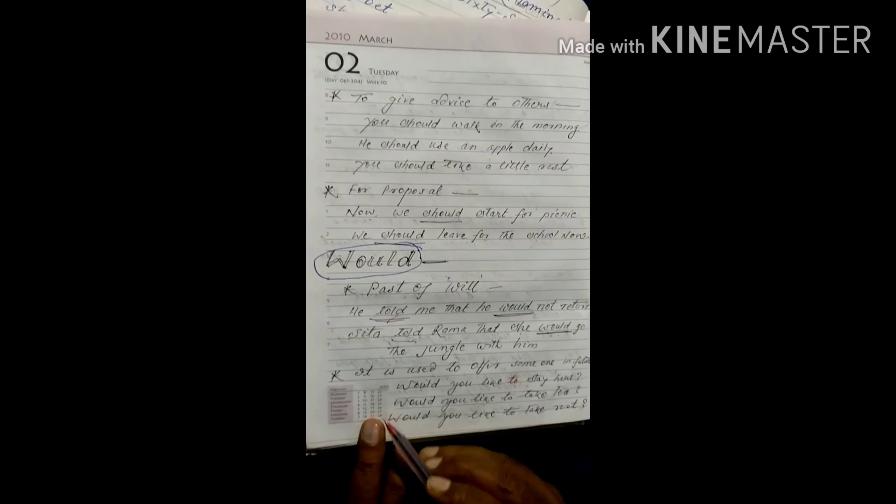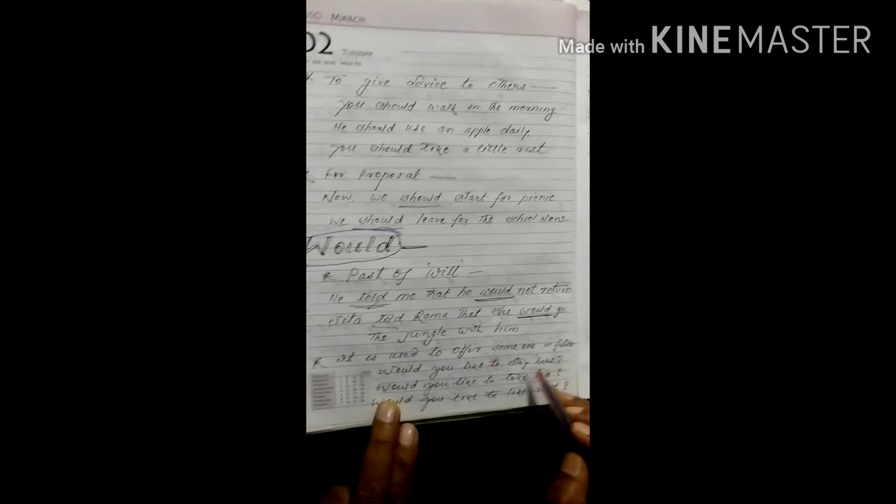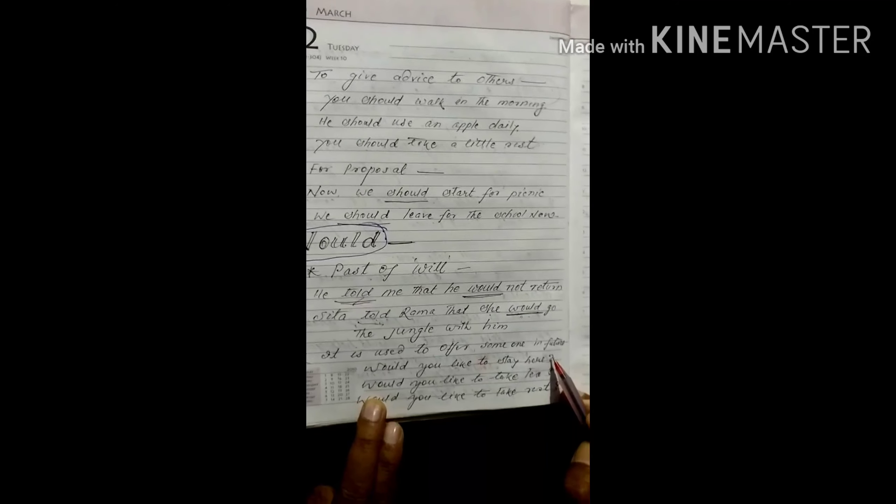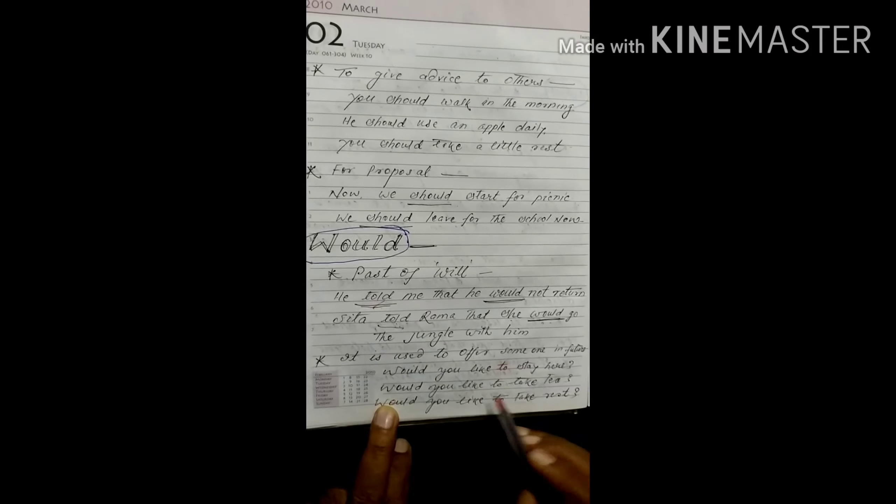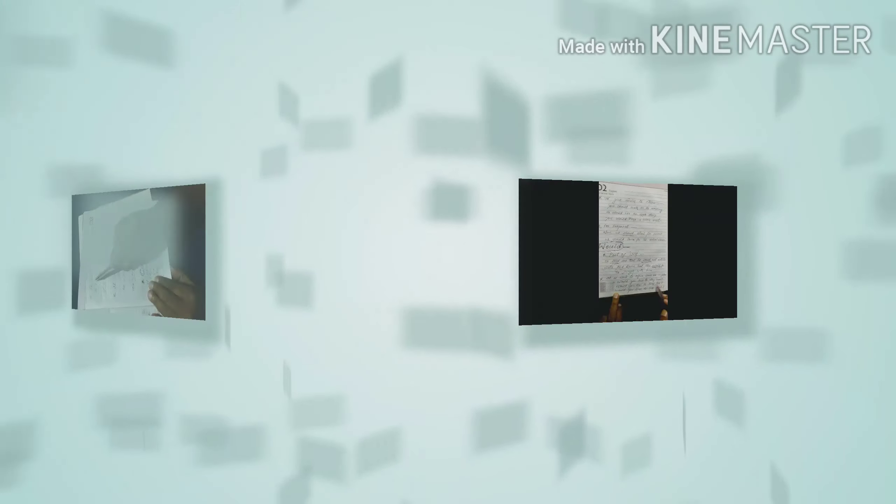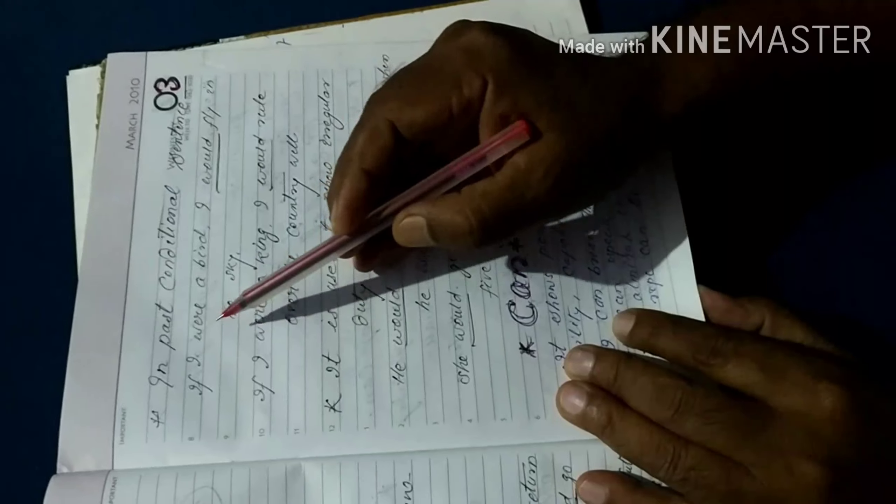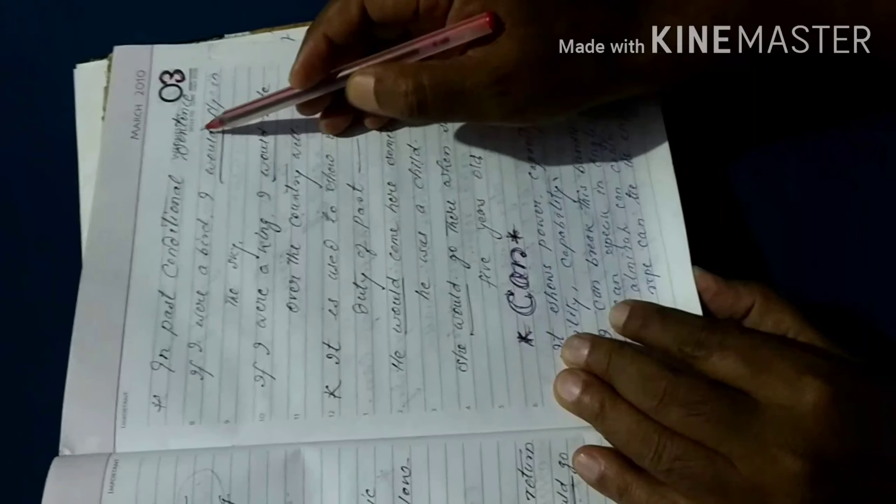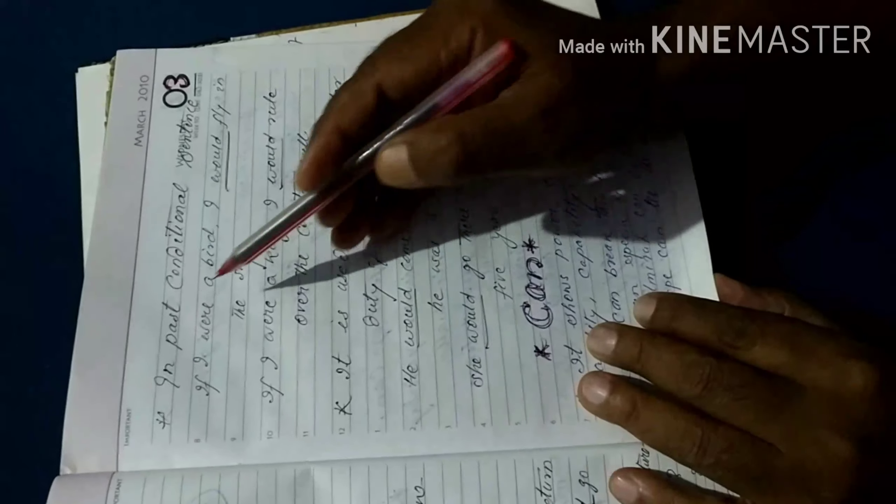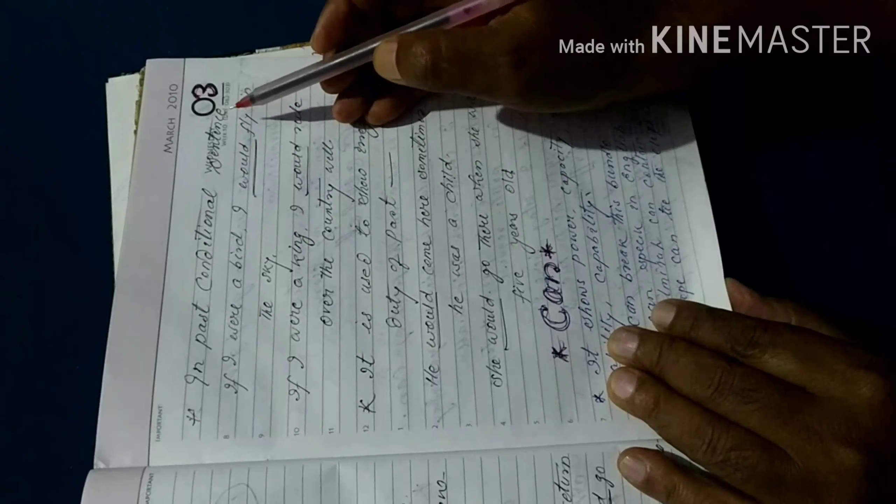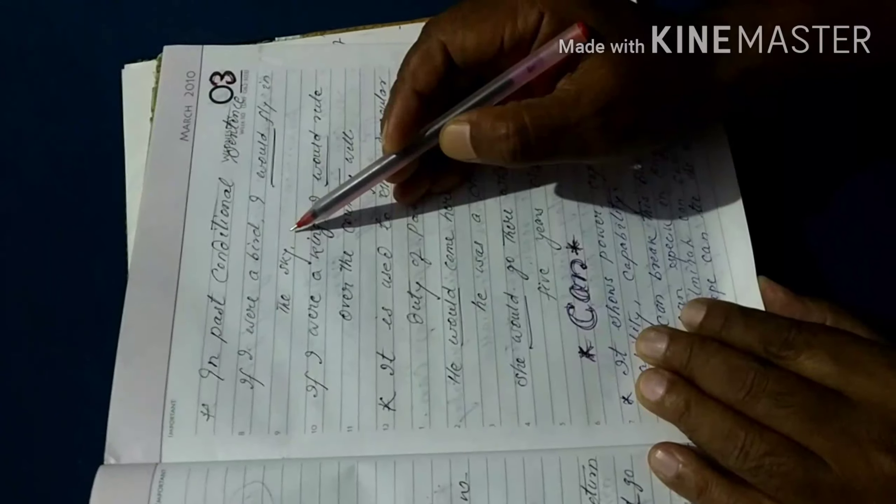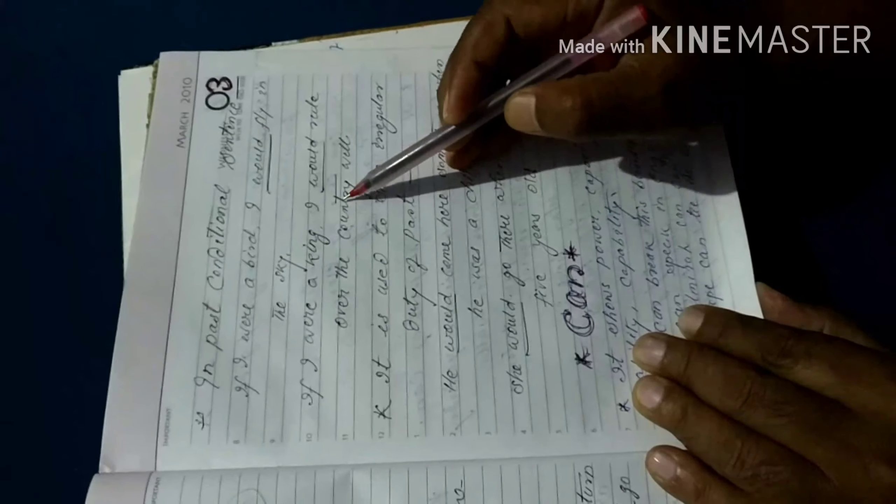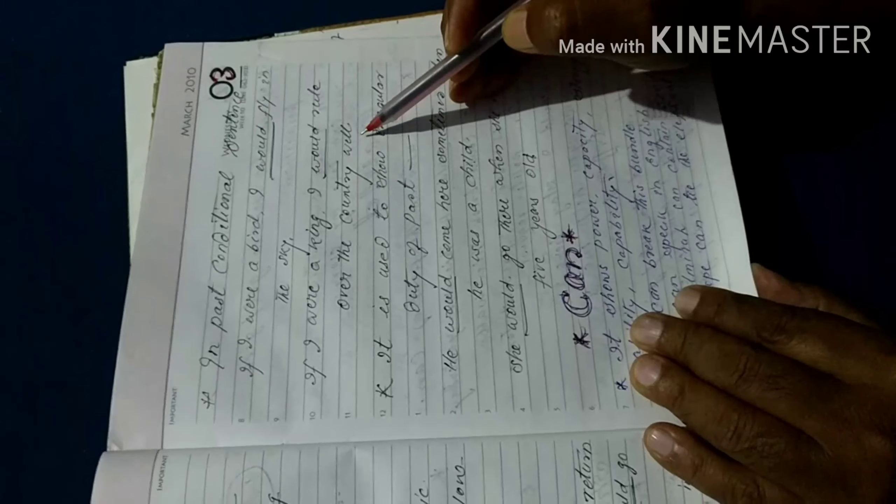Now, second use. It is used to offer someone something in future. For example, would you like to stay here? Now, third use of would is in past conditional sentence. For example, if I were a bird, I would fly in the sky. Or, if I were a king, I would rule over the country well.